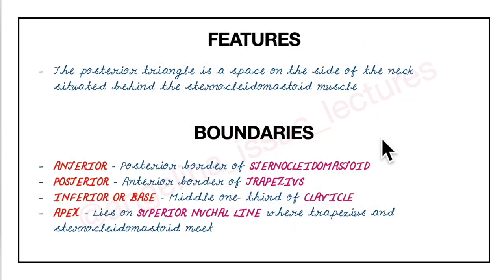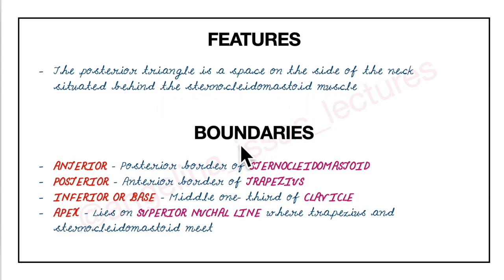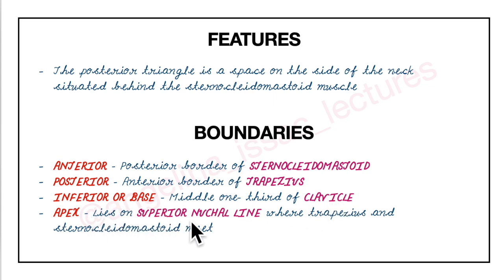To concise the points learned so far: the posterior triangle is a space on the side of the neck situated behind the sternocleidomastoid muscle. The anterior boundary is the posterior border of the sternocleidomastoid, the posterior boundary is the anterior border of the trapezius, the base is the middle one-third of the clavicle, and the apex lies on the superior nuchal line where the trapezius and sternocleidomastoid muscles meet.